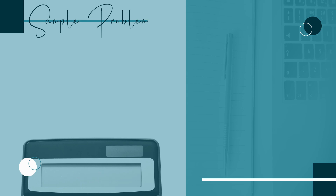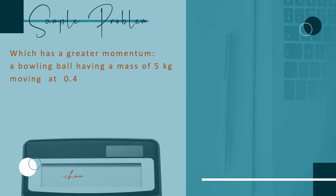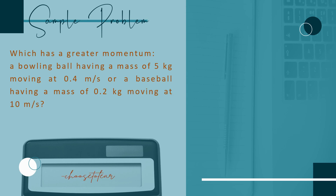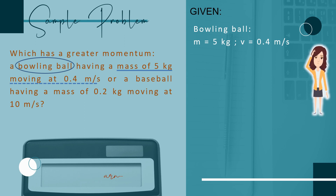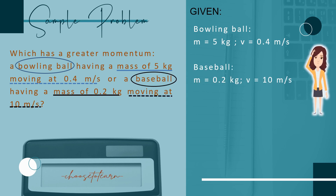To apply the concept of momentum, let's solve this simple problem: Which has greater momentum? A bowling ball having a mass of 5 kilograms moving at 0.4 meters per second, or a baseball having a mass of 0.2 kilograms moving at 10 meters per second? We will use the GAFSA method. For the bowling ball, mass is 5 kilograms and velocity is 0.4 meters per second. For the baseball, mass is 0.2 kilograms and velocity is 10 meters per second.